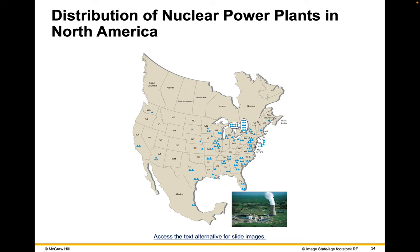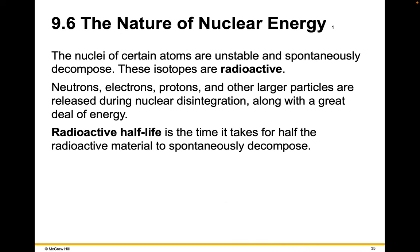The distribution of nuclear power plants in North America shows they're clustered in the eastern half of the country. Michigan has a number — I think four.